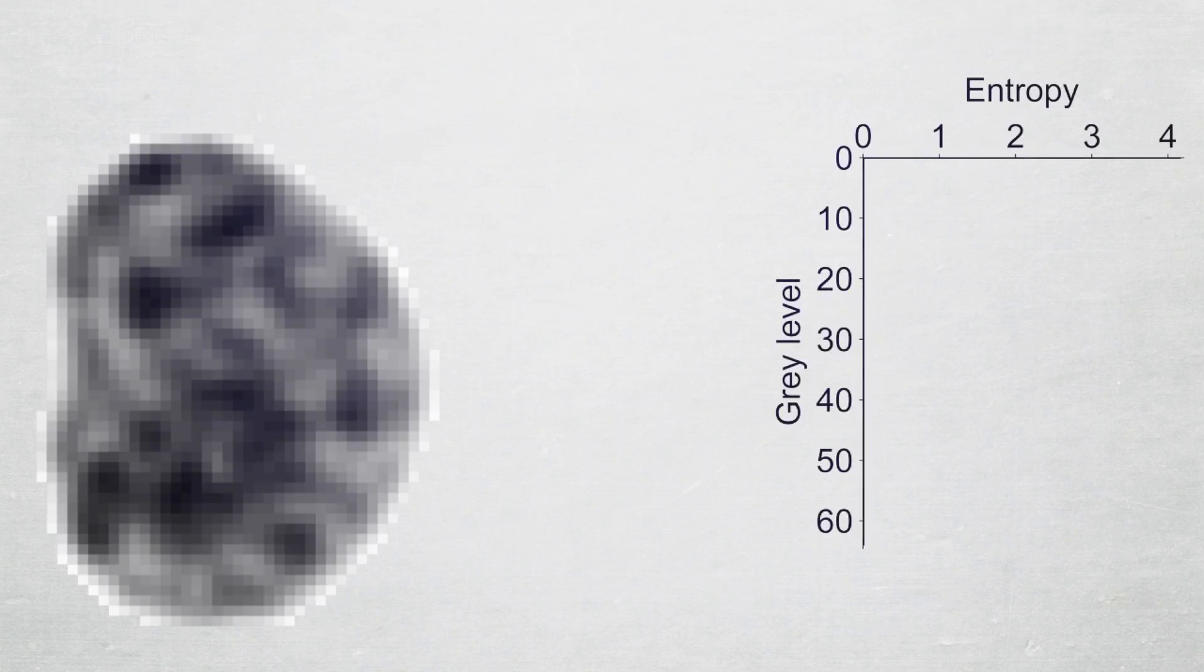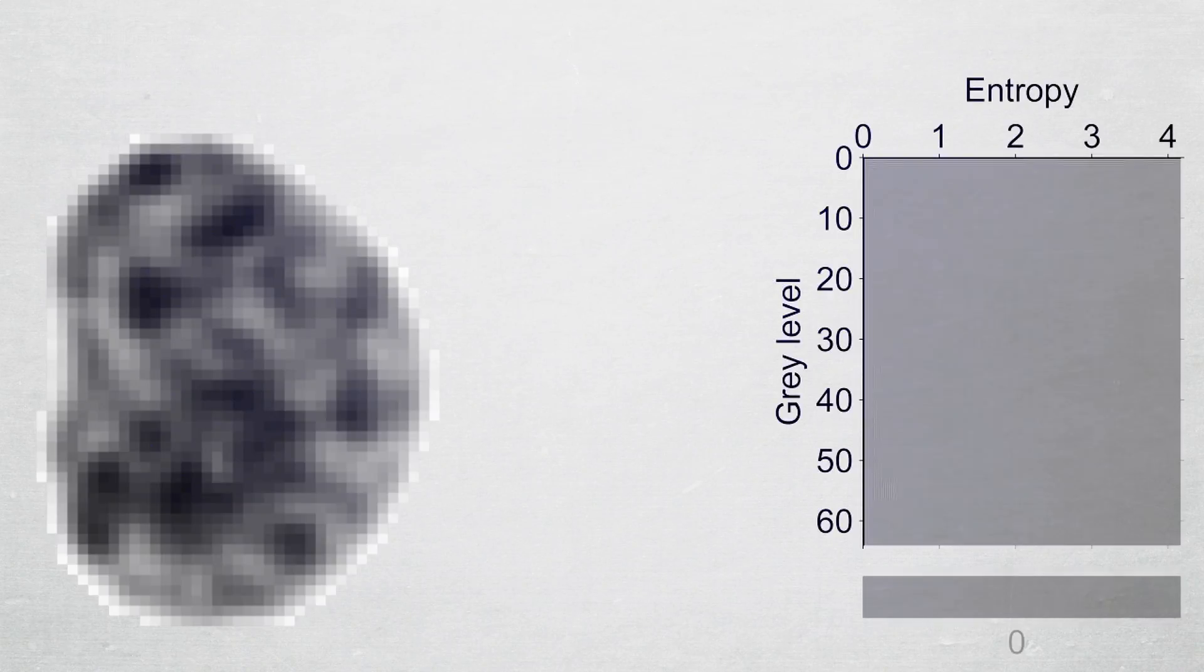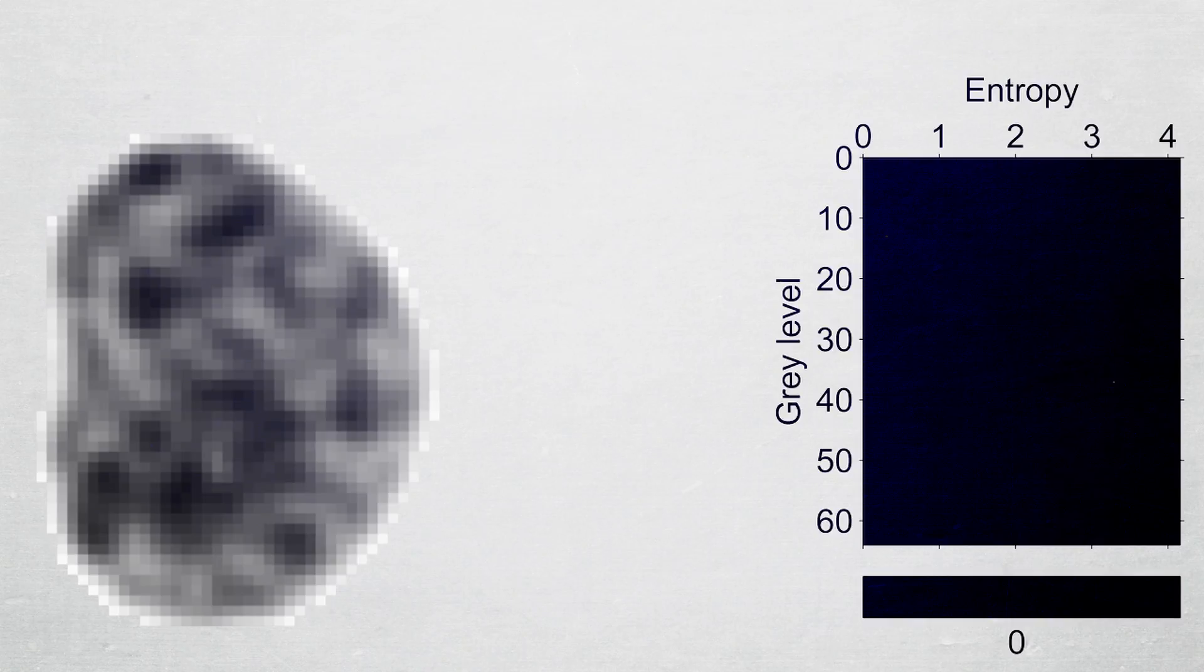The texture of each nucleus is analyzed by computing a matrix which combines gray level and entropy. This matrix is initialized as the zero matrix.